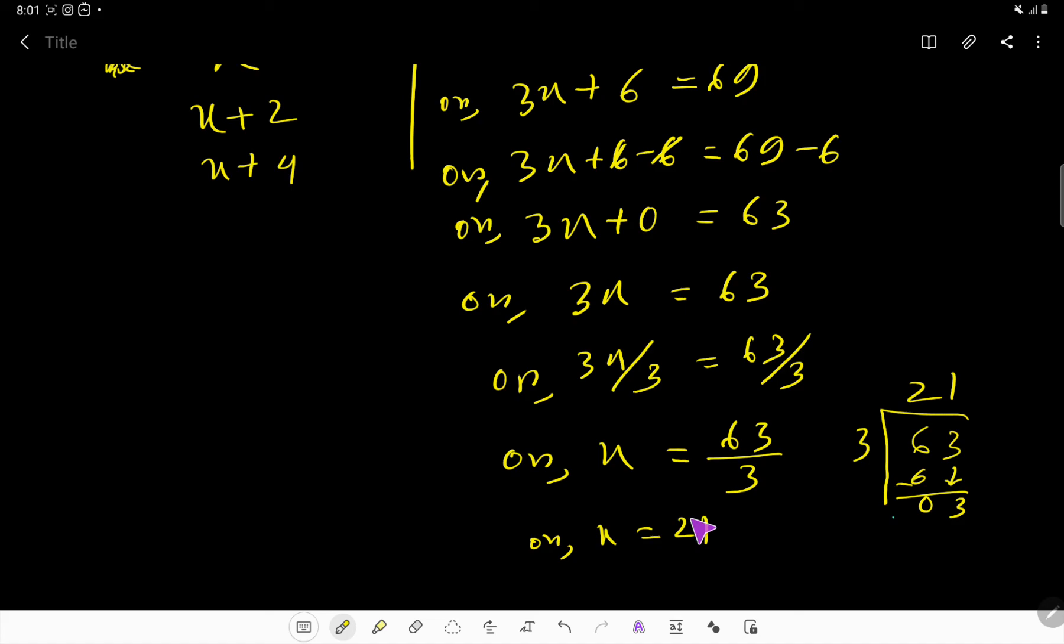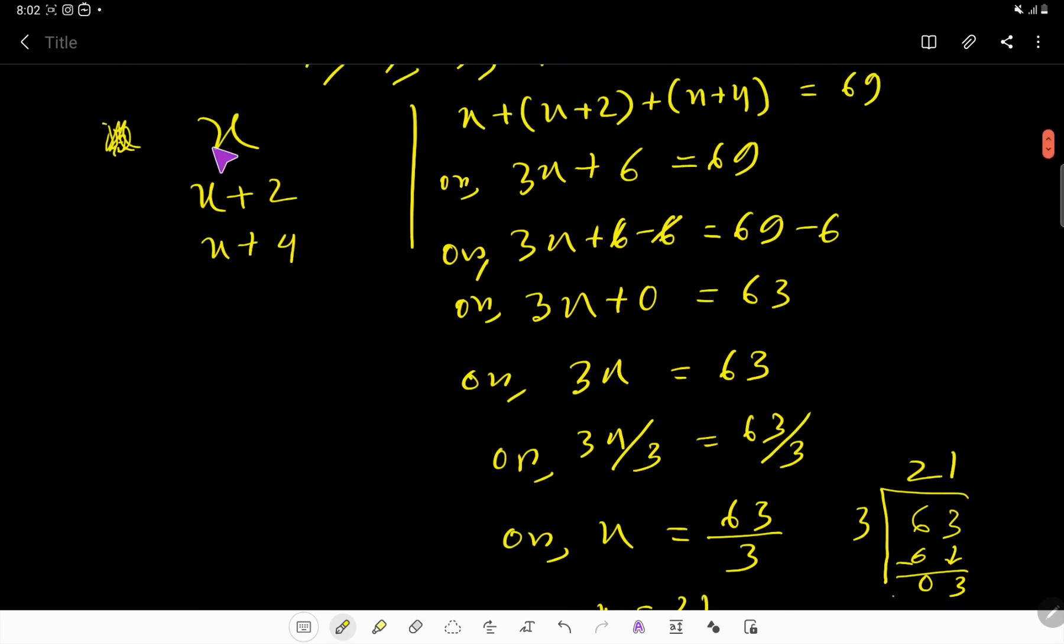x equals 21. Now put the value of x here. So the first number is 21, the second number will be 21 plus 2, that is 23, then the third number will be 21 plus 4.